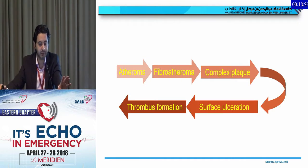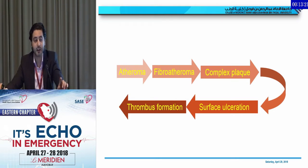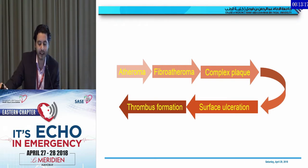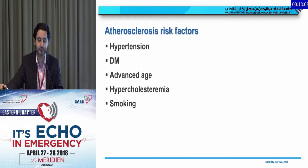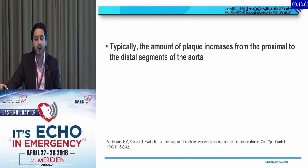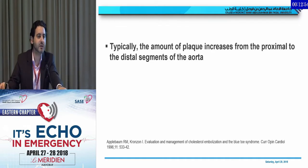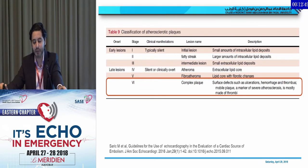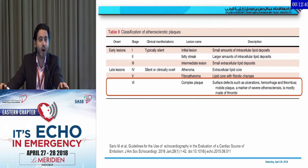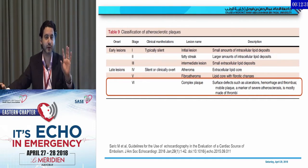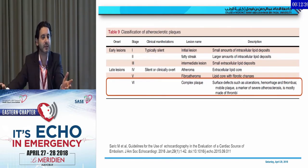It starts as atheroma, then you have a fibro-atheroma where you have a fibrous cap, then it becomes a complex plaque — remember the term complex plaque. Then you have surface ulceration and thrombus formation, embolization, etc. As you travel in the aorta from proximal to distal, you will have more atherosclerosis. The definition of complex plaque is when you have a surface defect like an ulcer, hemorrhage, thrombus, or a mobile mass. If none of those are present but the atheroma is four millimeters or more, it is still considered complex — because its association with thromboembolism is higher.